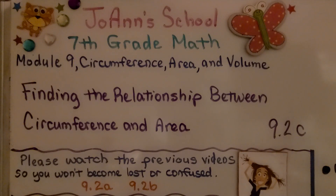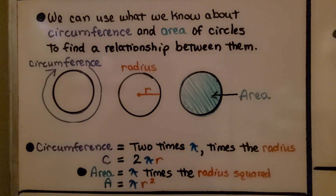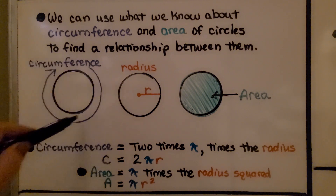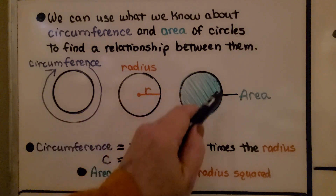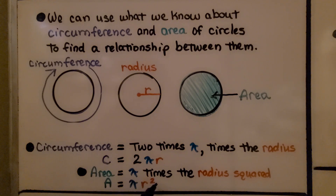Lesson 9.2c: finding the relationship between circumference and area. In the last video, we saw that the area of a circle is equal to pi times the radius squared. We can use what we know about circumference and area of circles to find a relationship between them. The circumference is the measure around the edge of the circle, the radius goes from the center to the edge, and the area fills up the inside. Circumference is 2πr, and area is πr².